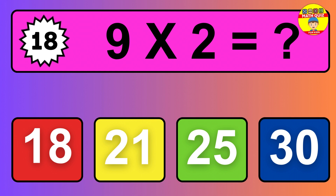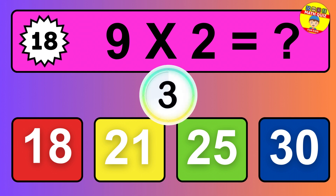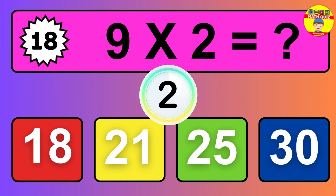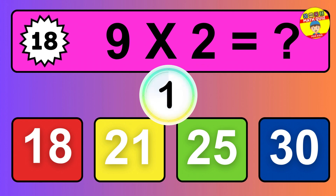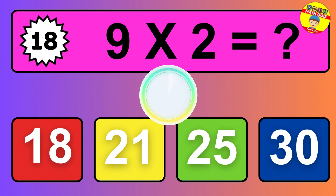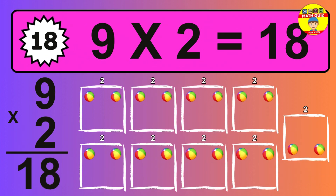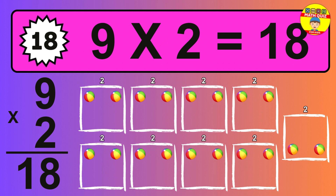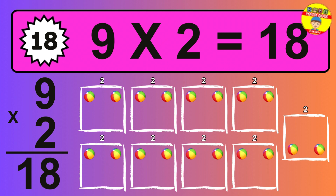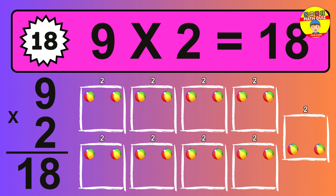Question eighteen. Nine times two equals what? So the answer is nine times two is 18. To calculate, we have nine groups with two balls each one. So how many balls do we have? 18 balls.